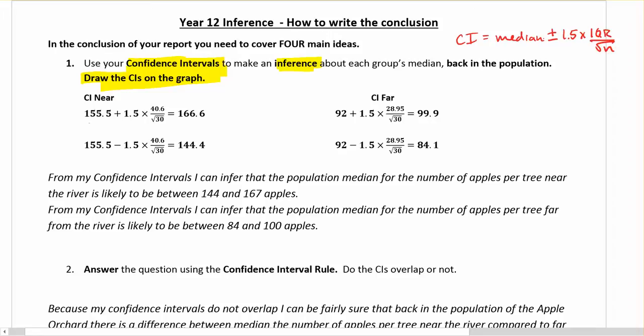Here you can see I've got the four apples near the river and four apples far from the river. I've got the median plus 1.5 times IQR divided by the sample size of 30, with the minus giving me the upper and lower band of my confidence interval, and same for far from the river.